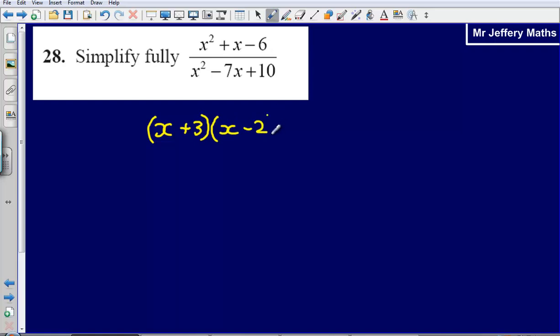So in order to factorise, remember we're just looking for a number that will multiply to make the number on the end, negative 6. But the two numbers need to sum to make the number in the middle. There's no number in the middle here, we can assume that is a 1. So 3 minus 2 sum to make 1, but plus 3 multiplied by negative 2 multiplied together to make minus 6.